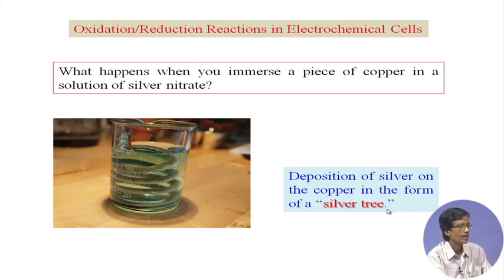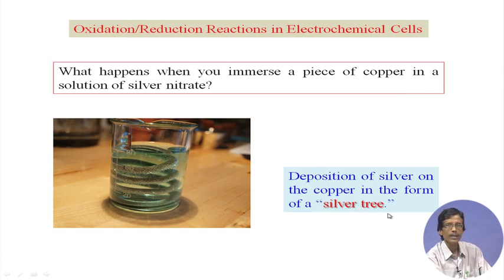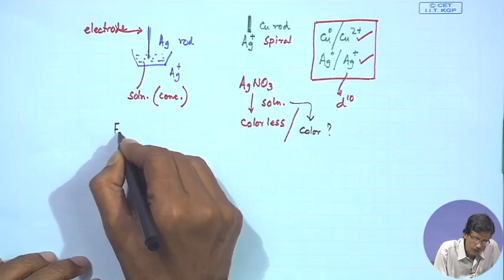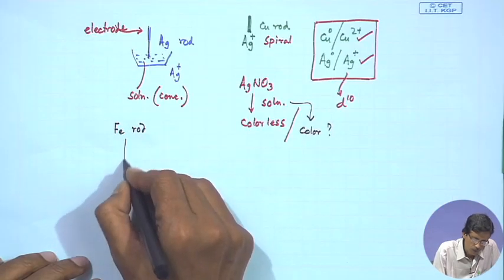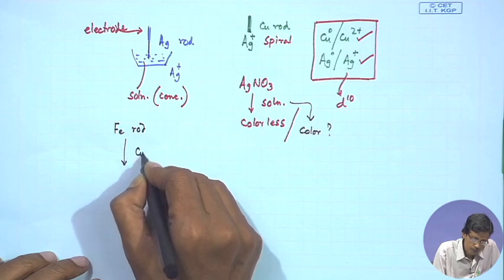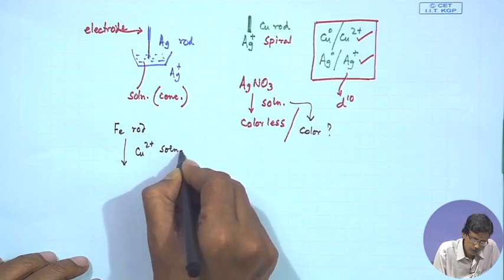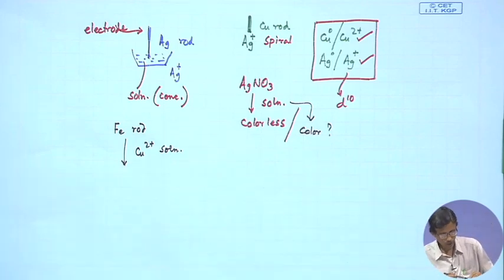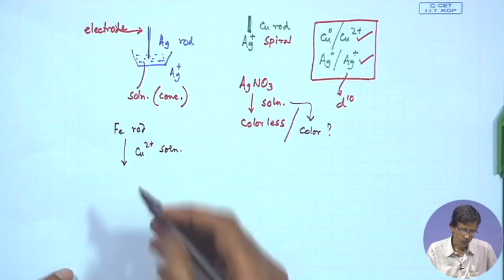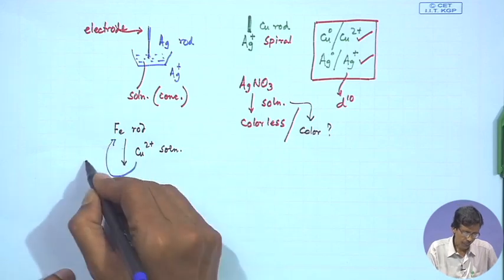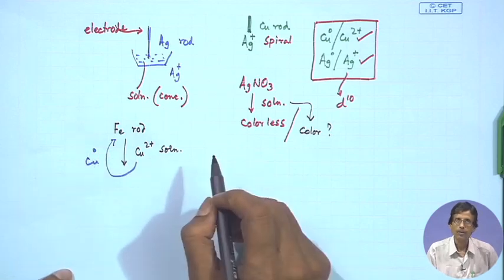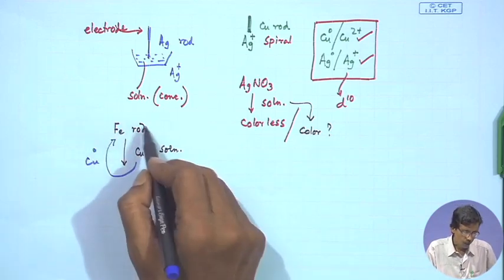In a reverse process, some of the copper rod is dissolving, giving rise to the corresponding colouration within the solution. This gives rise to a very famous reaction — deposition of silver on the copper rod or copper spiral in the form of a silver tree. This is the most important reaction: if we dip a copper rod or copper wire inside a silver solution, we get this particular type of silver tree reaction.